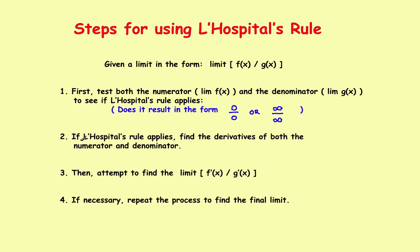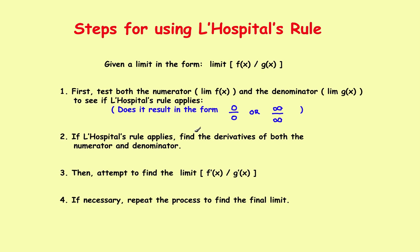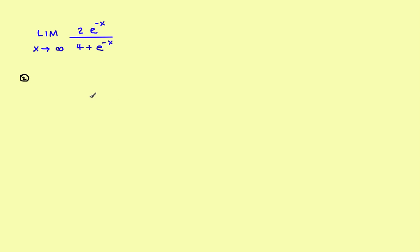Let's suppose you were lazy. You looked at it and decided to skip step 1 — to not run this test to see if it applied — and took off directly on step 2. Let's just see what kind of problems would result. We're going to go directly to step 2. Step 2 says, if the rule applies, find the derivative of both the numerator and the denominator. So you skip step 1 and go ahead and find the derivative of both.